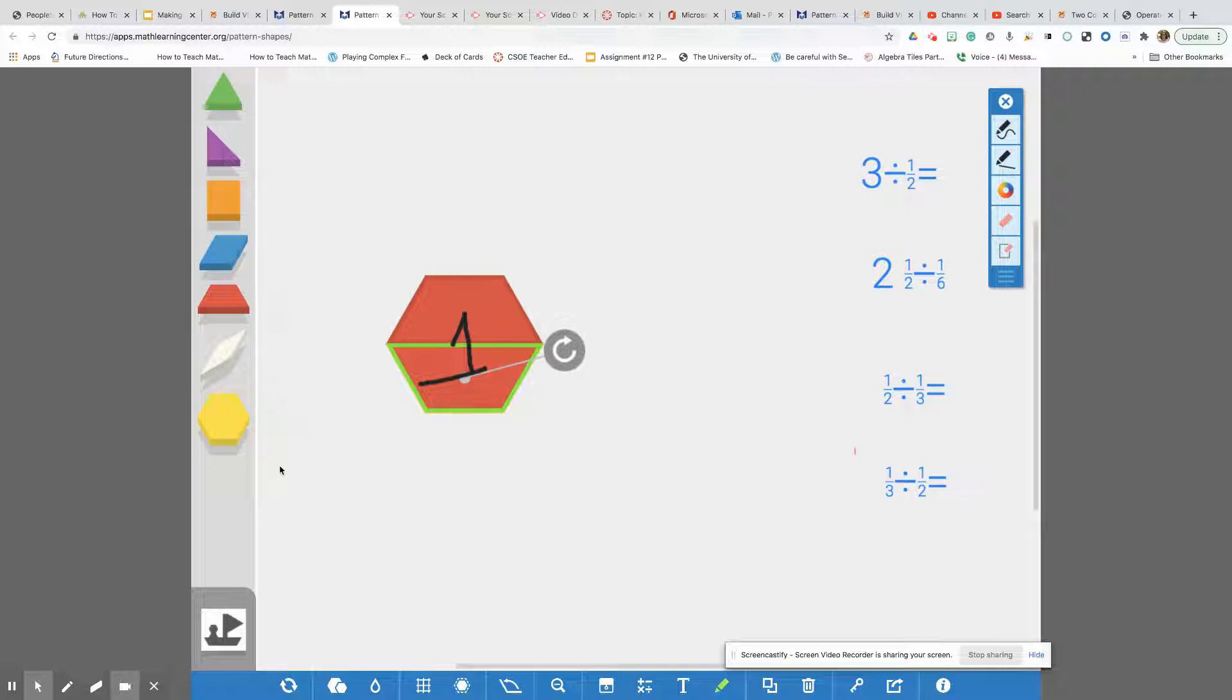So that tells us that if we can fit two, each of these trapezoids are one half in relation to our unit one. So I'm going to go ahead and label this red trapezoid as one half. Okay. So now we know that every red trapezoid in our problem is going to be one half. Let's try another shape.